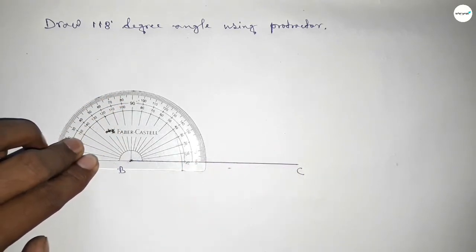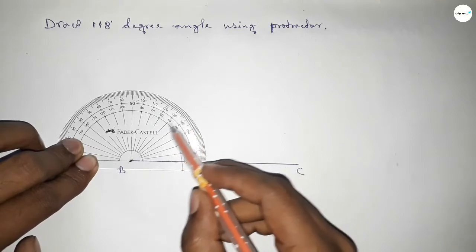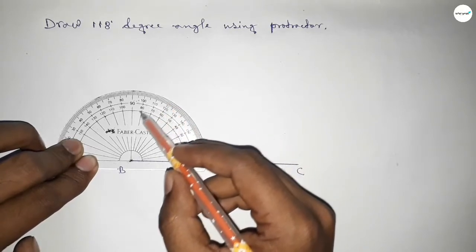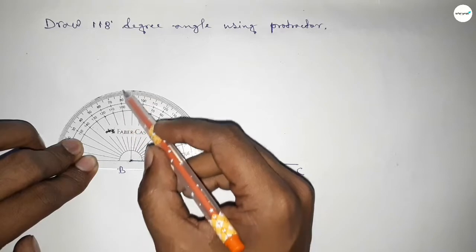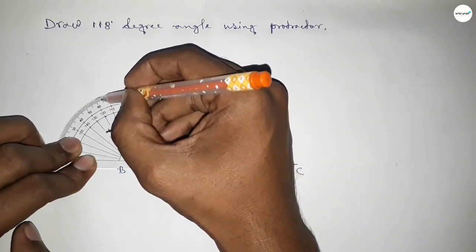So this is starting angle: 0, 10, 20, 30, 40, 50, 60, 70, 80, 90, 100, 110, 115, 116, 117...